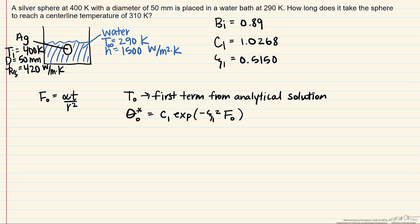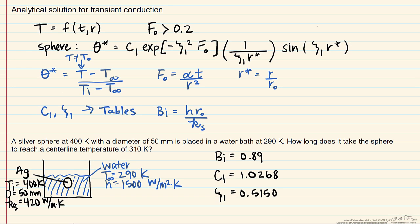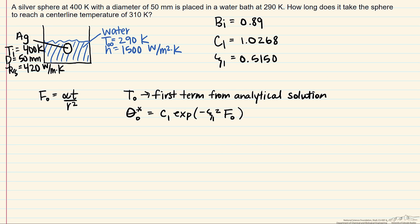And the reason we do this, take a look at our equation. At the centerline temperature, that r star is 0, so it's impossible to calculate the centerline temperature with those final two terms.